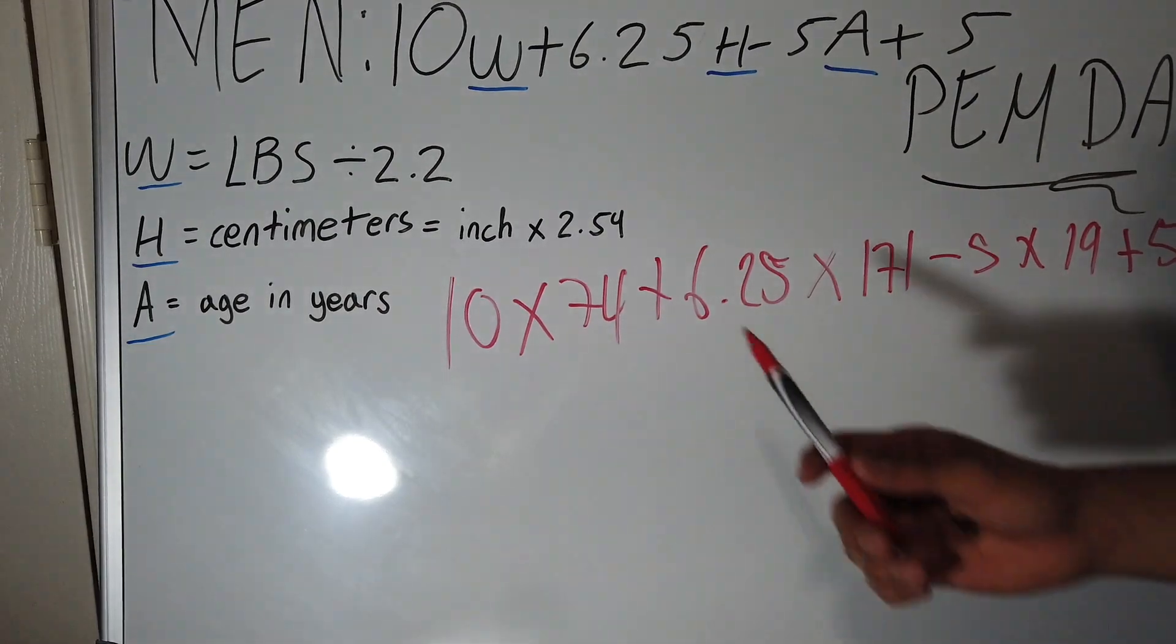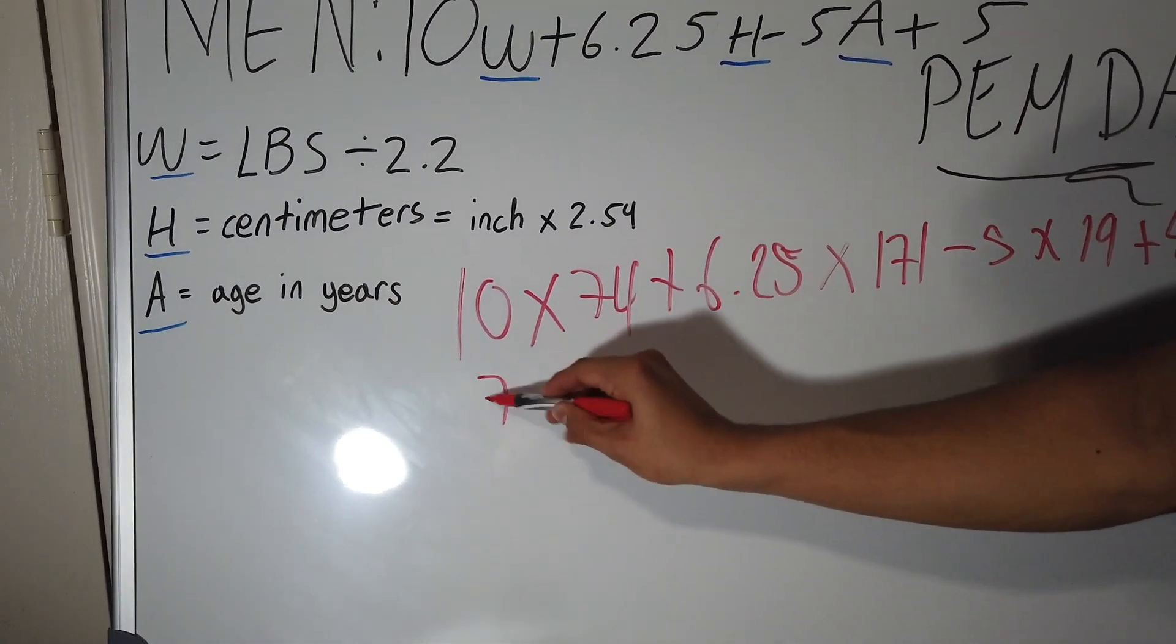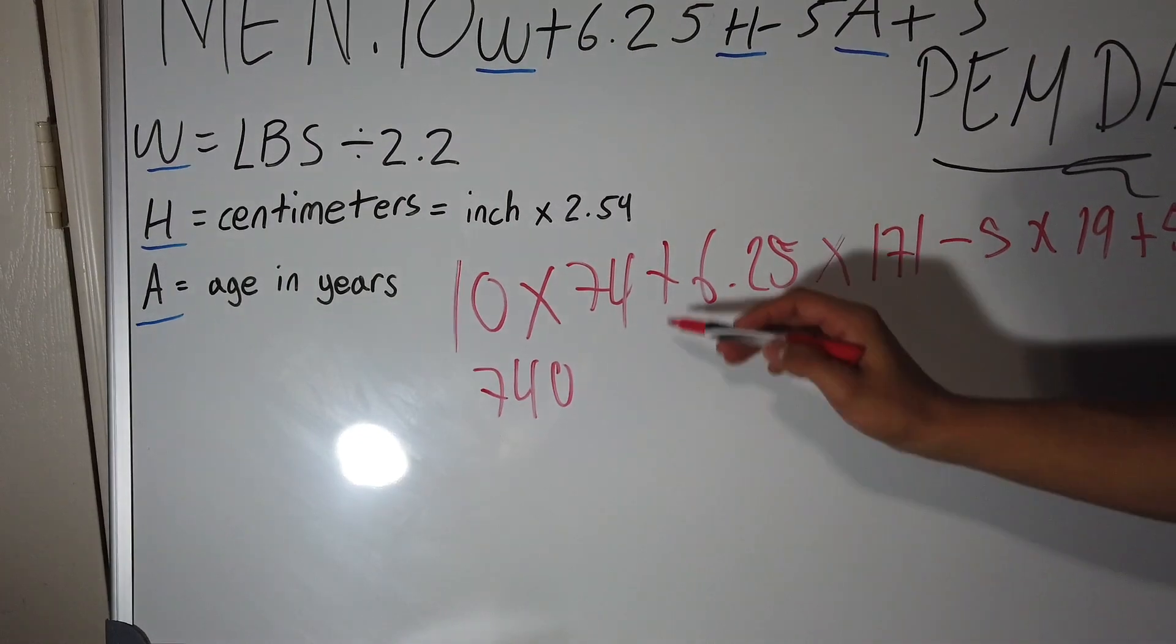So when you multiply 10 times 74, it gives you 740, and then you would just bring it down.